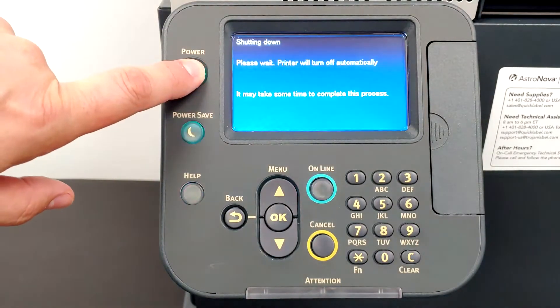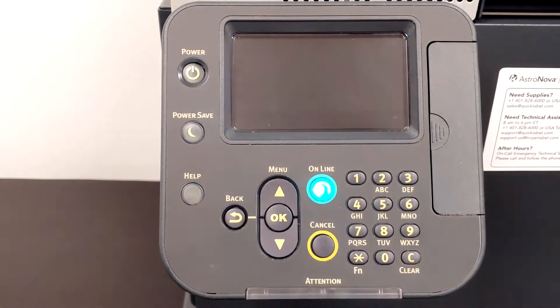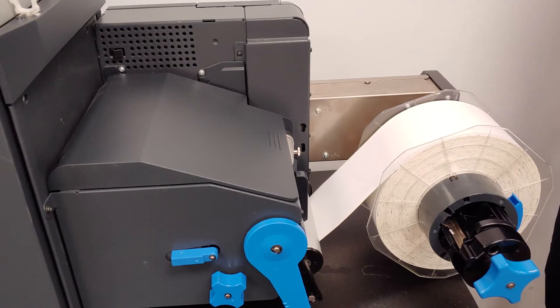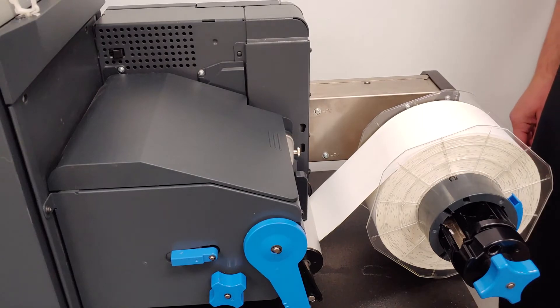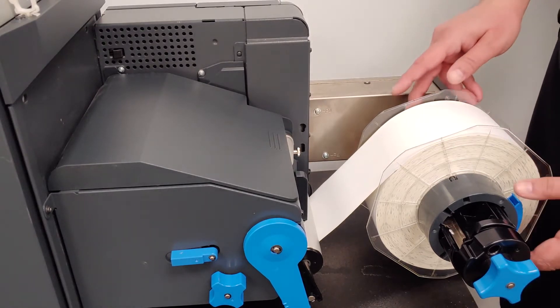Power off the printer. If there is a roll of labels installed and threaded into the unwinder, remove these first. Otherwise, you may skip to the next section.